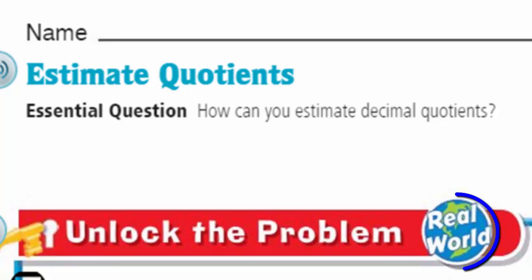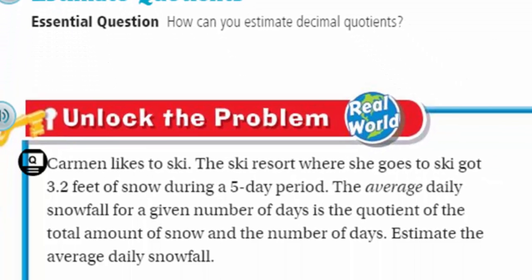It's a real world problem. Carmen likes to ski. The ski resort where she goes to ski got 3.2 feet of snow during a five day period. It says the average daily snowfall for a given number of days is the quotient of the total amount of snow and the number of days, and it says to estimate the average daily snowfall.